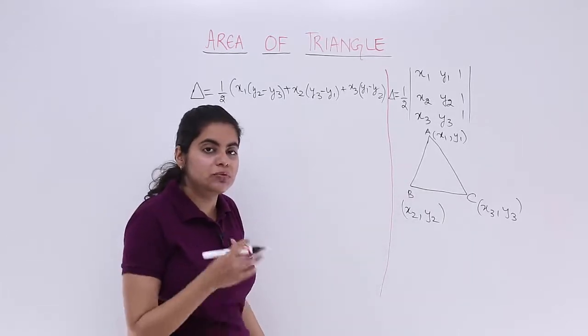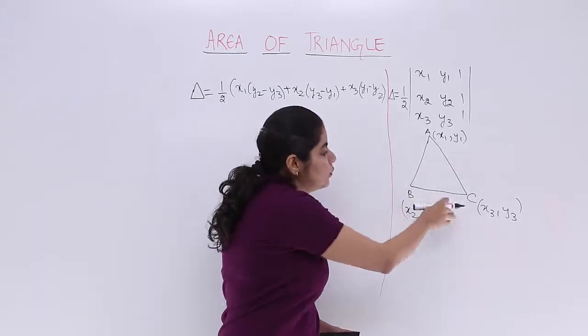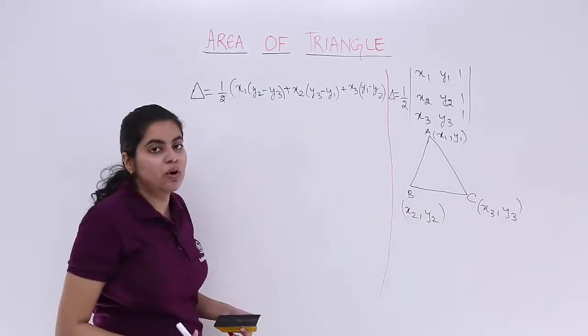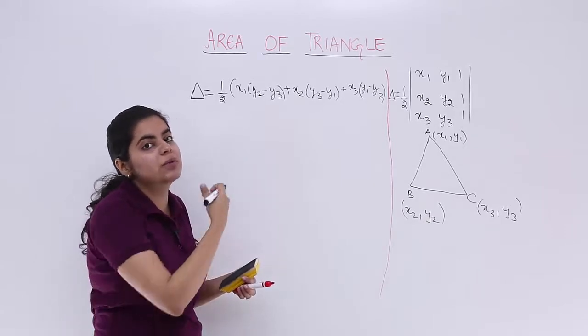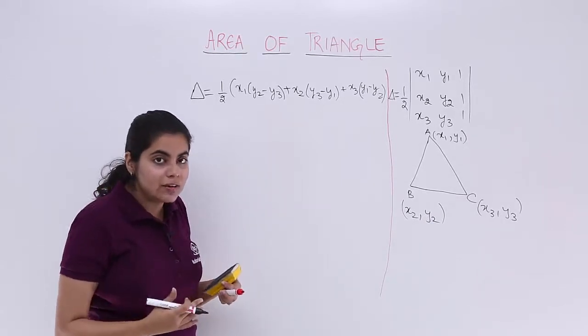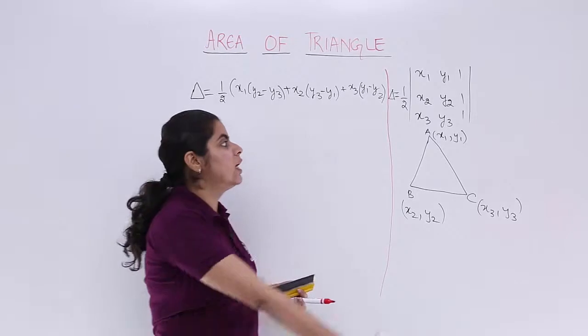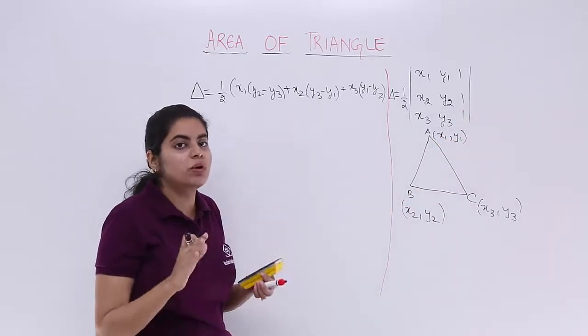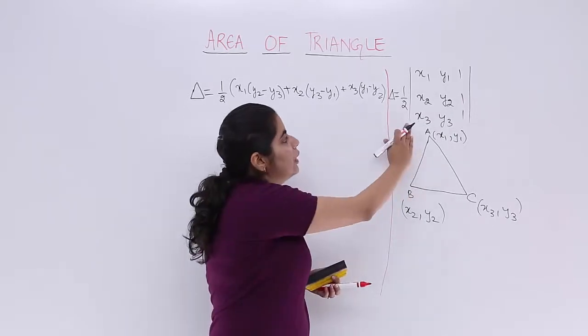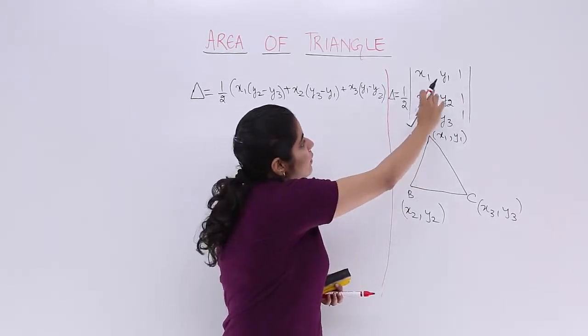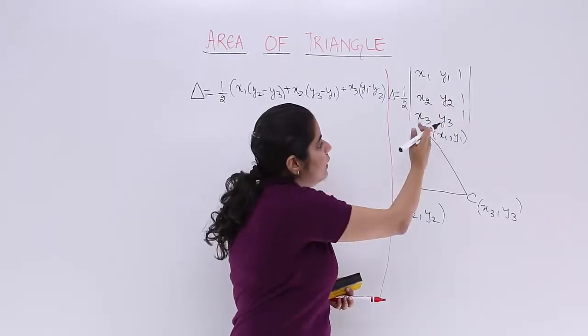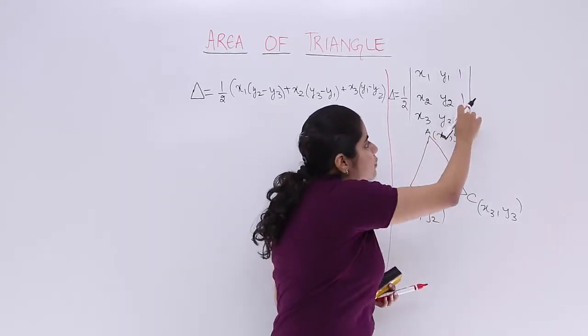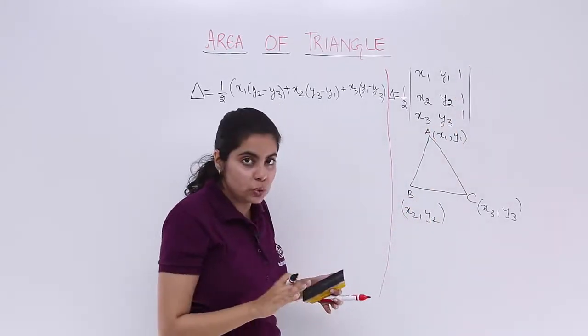One method to find the area of triangle is that you know the coordinates, you just put the coordinates in this formula of area of triangle that you have been studying so far. Otherwise, if you do not remember the formula, just remember this determinant form and then evaluate. That is what we are going to learn. So, determinant you have to remember at least. It is x1, y1, 1, x2, y2, 1, x3, y3, 1. This 1, 1, 1 is written in the determinant only.